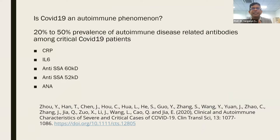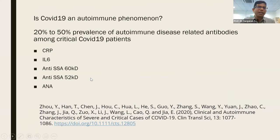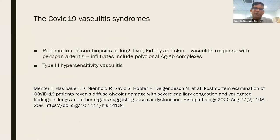Is COVID-19 an autoimmune phenomenon? The frightening thing is: yes. There is up to a 50% prevalence of autoimmune disease-related antibodies in critically ill COVID-19 patients. When COVID-19 gets severe, think of autoimmune disease. Vasculitis has been very well described, and it is through post-mortem studies that we found immune complexes in many tissues of the body, most of them in the blood vessels.